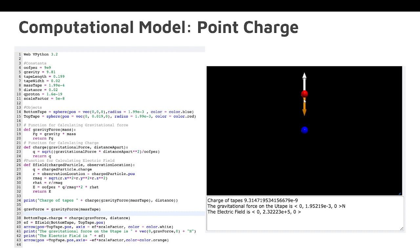The orange arrow is the force due to gravity, and this is the electrical force from the blue tape that is repelling. So the charge of the tapes is 9.3147 times 10 to the negative 9th. The gravitational force of the tape is 1.95 in the positive Y direction, and the electric field is 2.322 times 10 to the 5th in the positive Y direction.